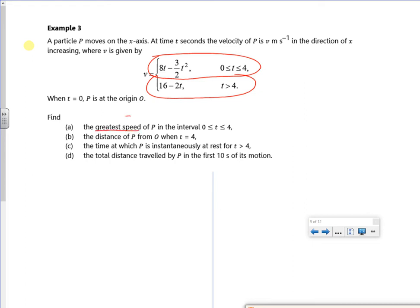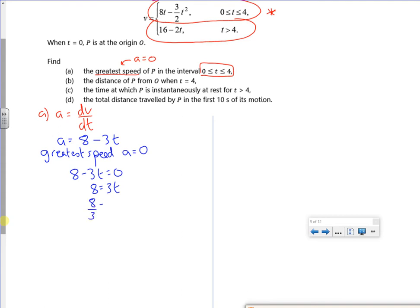Part A says the greatest speed, so I know that's when my acceleration is zero because I'm not accelerating anymore. I'm in the 0 to 4 range, so I've got to be using the first equation. I remember that the acceleration is differentiating the velocity. So my acceleration is differentiating 8t, so that becomes an 8, and minus 3 over 2t squared becomes minus 3t. For the greatest speed, acceleration is zero. So 8 minus 3t is zero, 8 is 3t, so 8 over 3 is t.